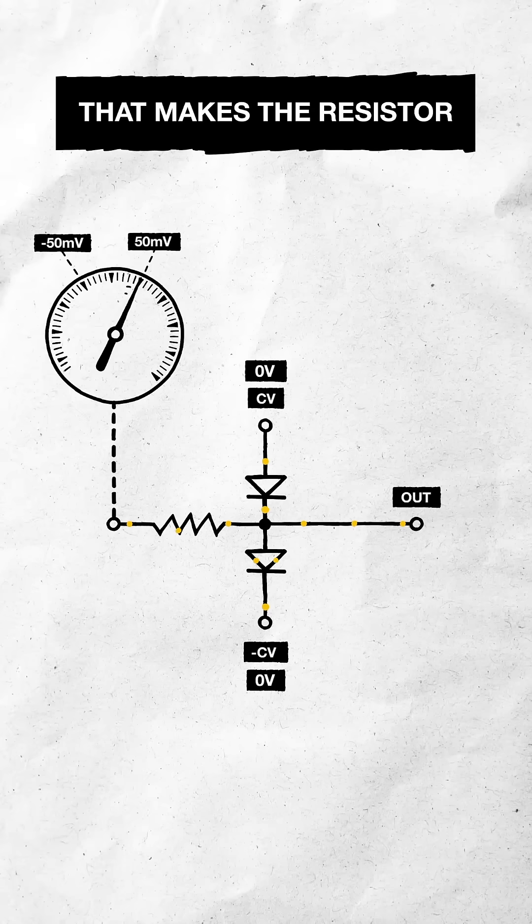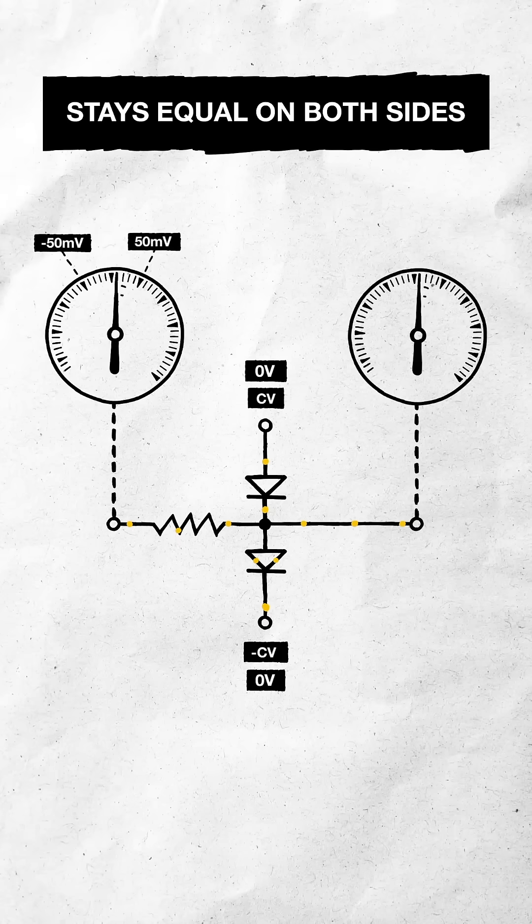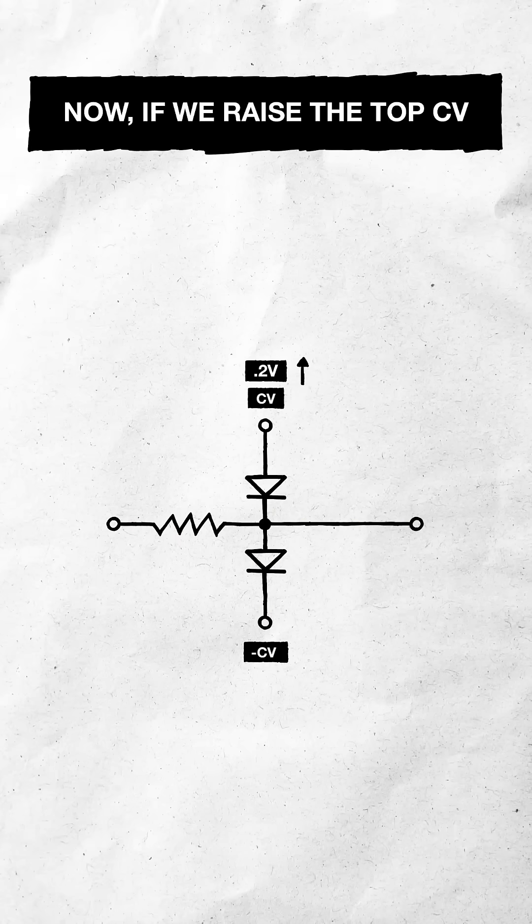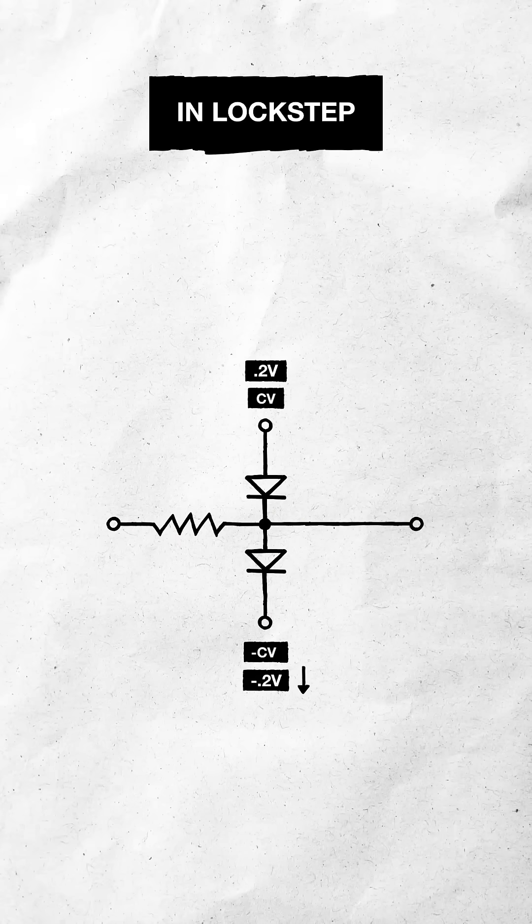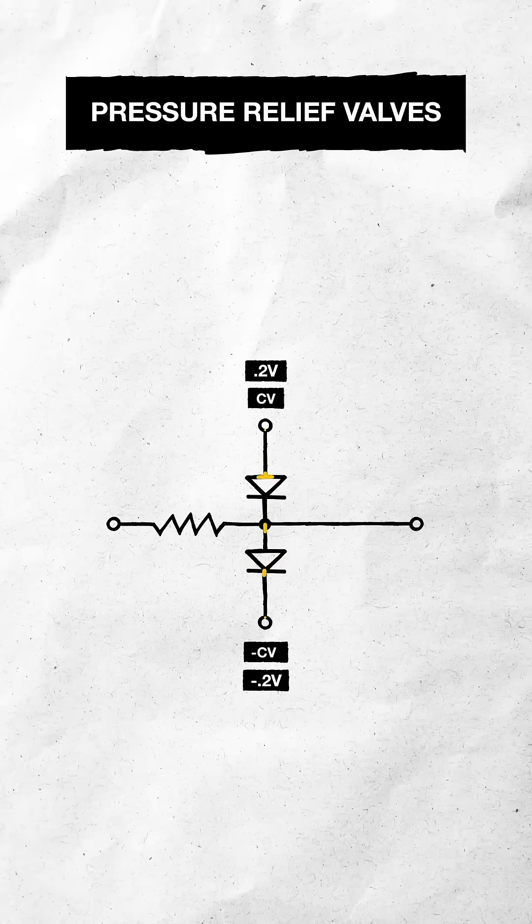That makes the resistor a dead end and the voltage swing stays equal on both sides. Now, if we raise the top CV and lower the bottom in lockstep, the diodes open like pressure relief valves.